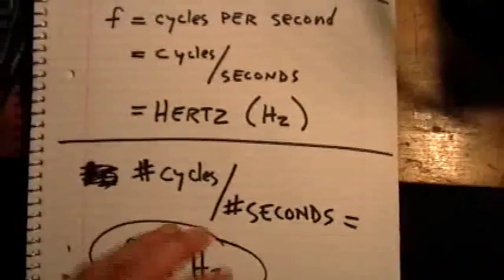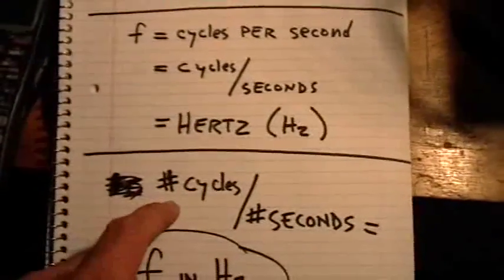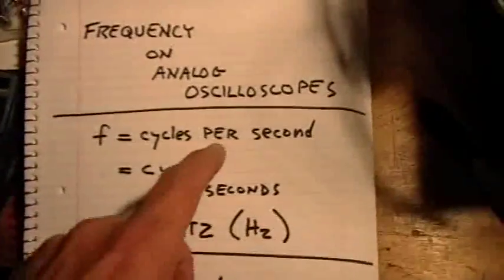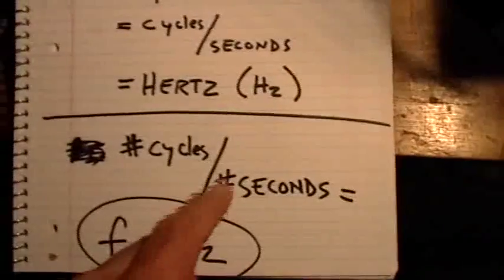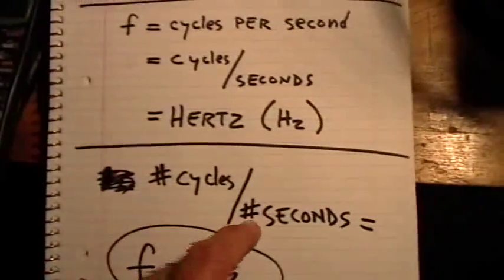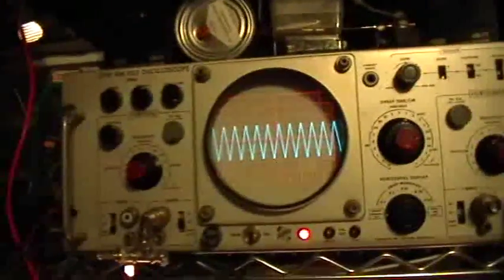The way that you determine the frequency in Hertz is you just count the number of cycles of the waveform and divide that - since per means divide - you divide that by the number of seconds and you wind up with your answer as the frequency in Hertz, cycles per second. I'm going to show you how to do that on the old Tektronix 503 here.